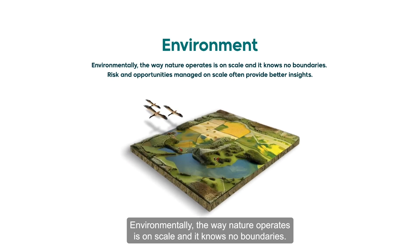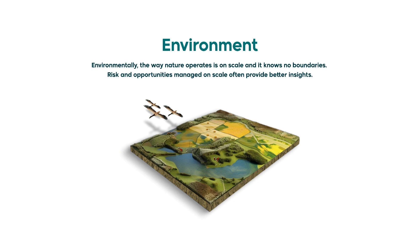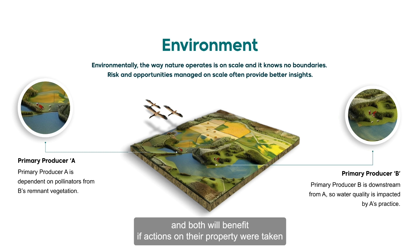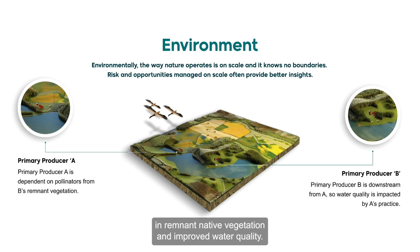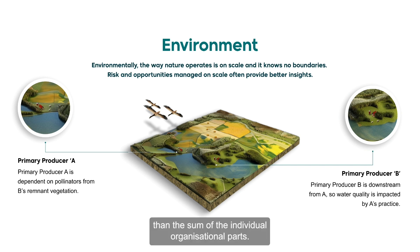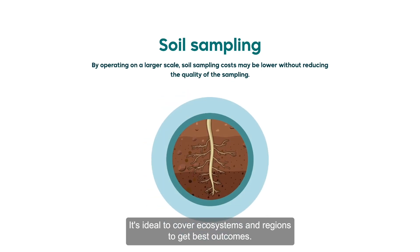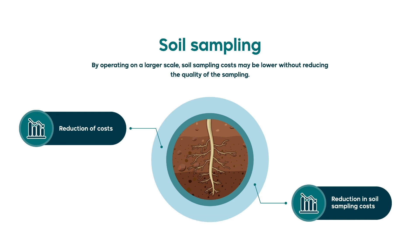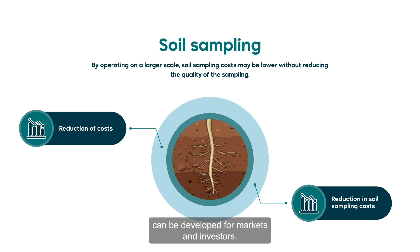Environmentally, the way nature operates is on scale and it knows no boundaries. Risks and opportunities managed on scale often provide better insights. In this diagram, primary producer A and B are interdependent and both will benefit if actions on their property were taken to improve natural capital value within the catchment, such as biodiversity, remnant native vegetation and improved water quality. Across this catchment or region, the combined benefits are greater than the sum of the individual organisational parts. It's ideal to cover ecosystems and regions to get best outcomes. Reduction in soil sampling costs without reducing quality while operating across larger areas is possible using this approach, and more powerful stories can be developed for markets and investors.